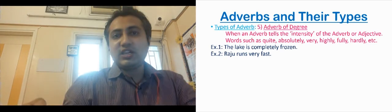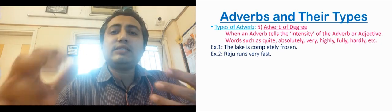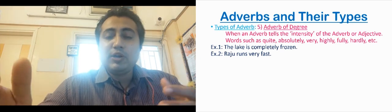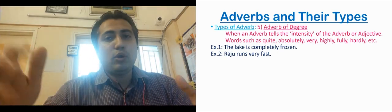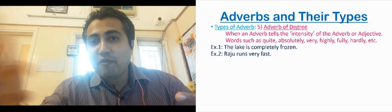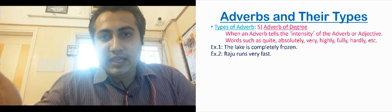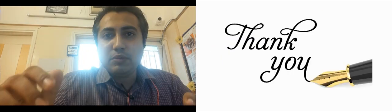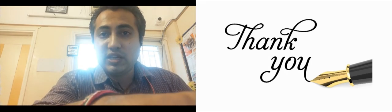So students, in this lecture we discussed five types of adverbs. Adverbs are words that tell something about an action or verb. First, how the action is done — adverb of manner. Where it is done — adverb of place. When it is done — adverb of time. How often it is done — adverb of frequency. And how much intensity an adjective or adverb carries — adverb of degree. I hope you have understood. If not, you can clear your doubts in the doubt clearing session, and I will also be sending a video where we will discuss how to solve the exercises of this chapter. Take care, stay home, stay safe.